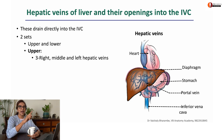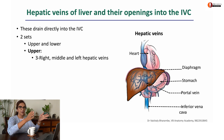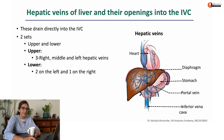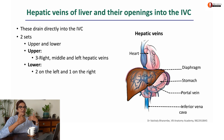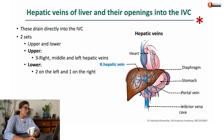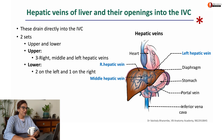There are an upper set and a lower set. The upper set consists of right, middle, and left hepatic veins. The lower set consists of a little variation — a few veins on the left and one on the right. All these drain directly into the inferior vena cava. So that's the right hepatic vein, that's the middle hepatic vein, that's the left hepatic vein.